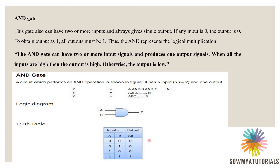The third basic gate is the AND gate, also called logical multiplication. The AND gate has two or more input signals and produces one output signal. When all inputs are high, the result is high; otherwise the output is low. In the truth table, when both operands are 1, the result is 1; otherwise the outputs are 0.